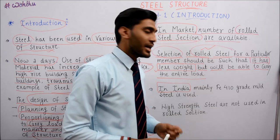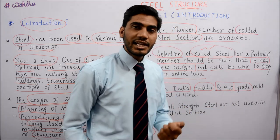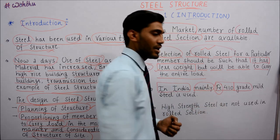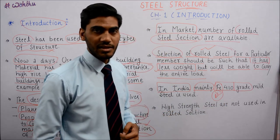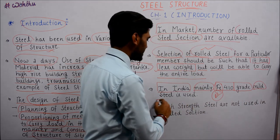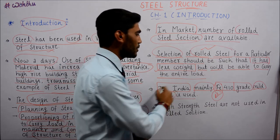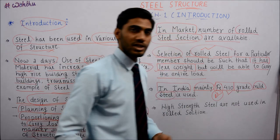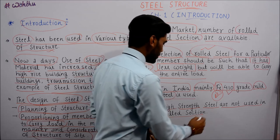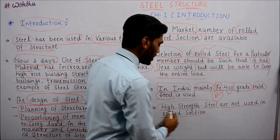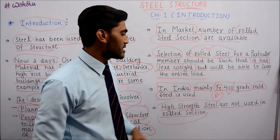In India, mainly FE 410 grade is used. FE 410 is a grade of steel - it refers to the characteristic compressive strength of steel. Mild steel is used in India in the FE 410 grade. High strength steel is not used in rolled sections - when we are making a rolled section, we do not use high strength steel in it.